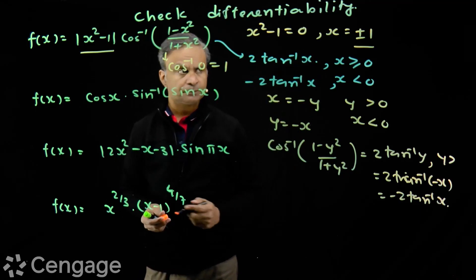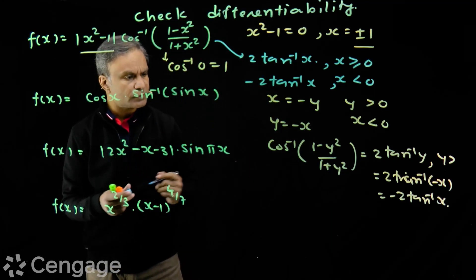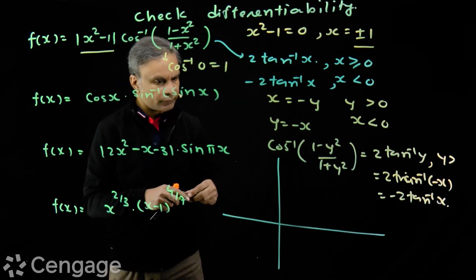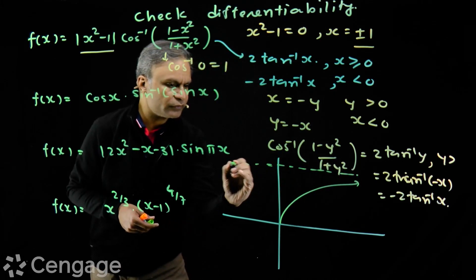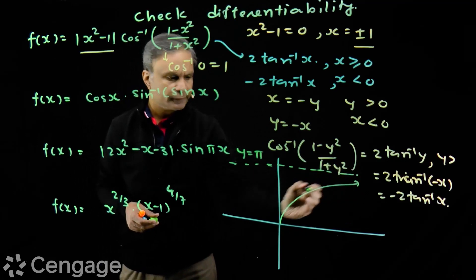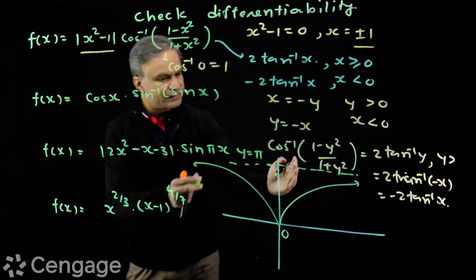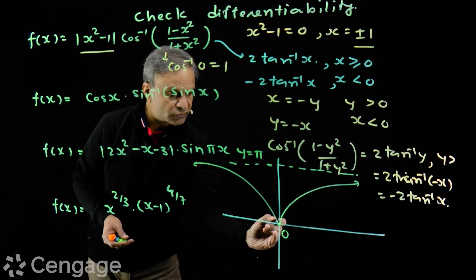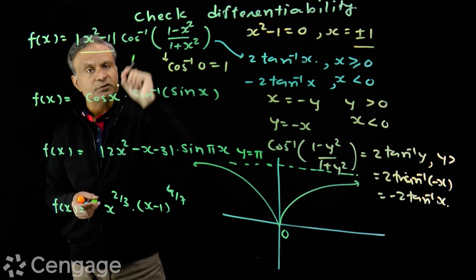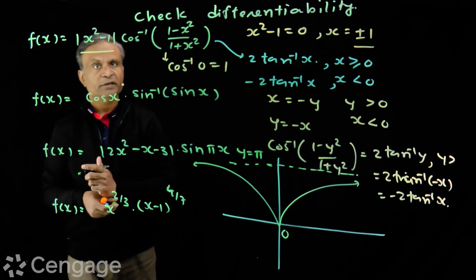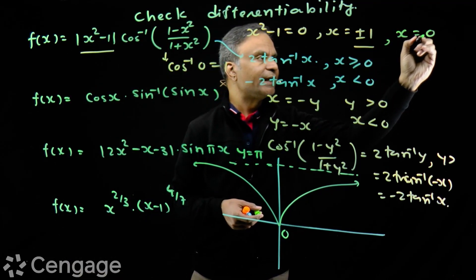This whole function is continuous. Its graph looks like 2·tan⁻¹(x) — an even function, so the graph is symmetrical about the y-axis, with asymptote y = π as x approaches infinity. Importantly, this function is non-differentiable at x = 0, and at x = 0 the value is non-zero. So we get one more point of non-differentiability. In total we have three points: x = 0 and x = ±1.